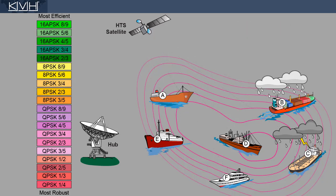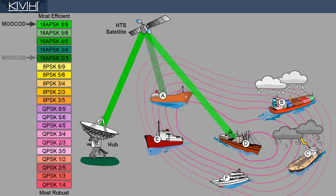Let's run through an example to see how this works. Vessels A and D are enjoying clear skies and they're near the center of the beam. Therefore, their SNR is high, and they receive traffic on a very efficient 16 APSK MODCOD.